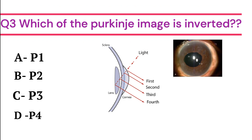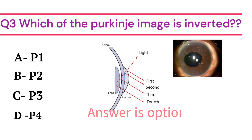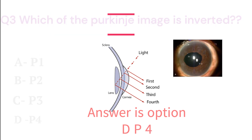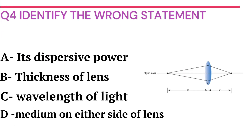Which of the Purkinje images is inverted? Options are: P1 from anterior surface of cornea, P2 from posterior surface of cornea, P3 from anterior surface of lens, P4 from posterior surface of lens. The answer is Option D - from the posterior surface of lens.